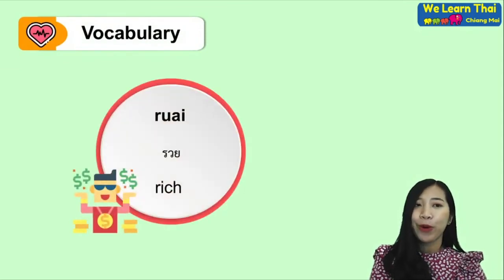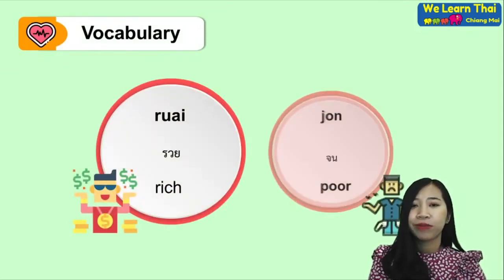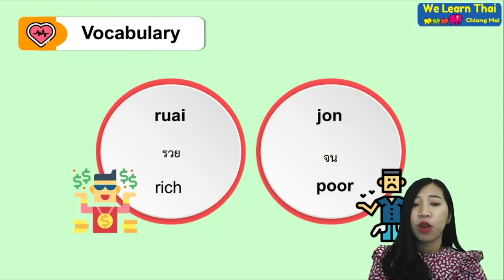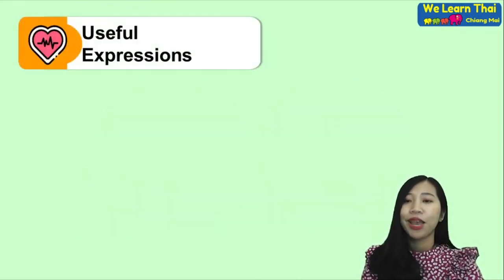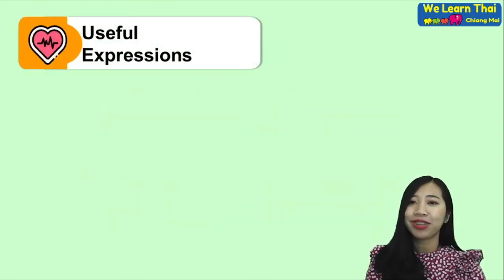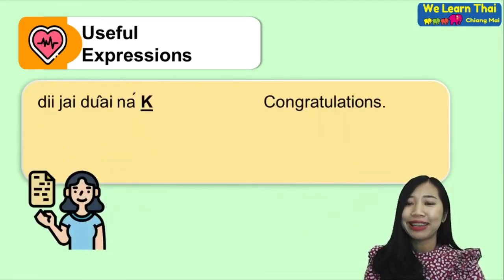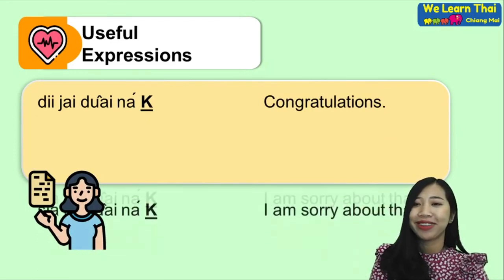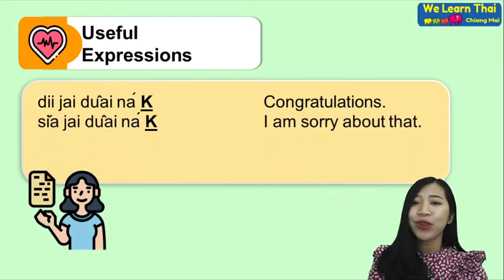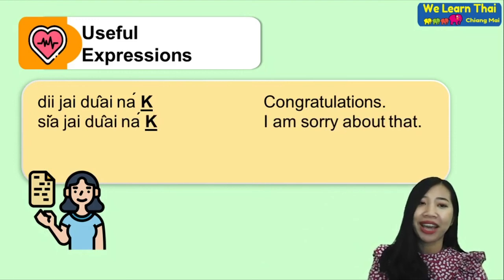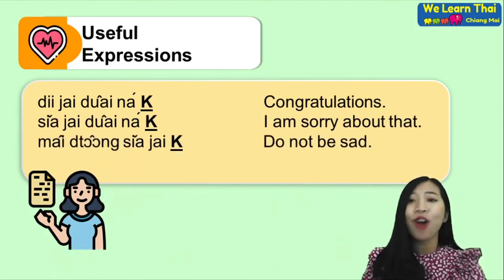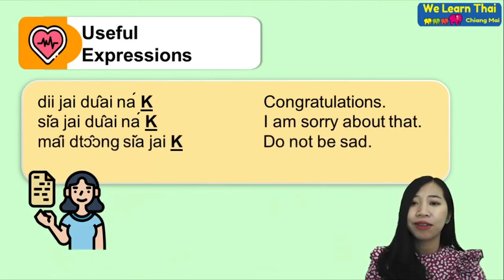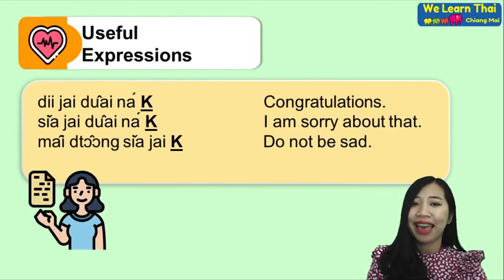We also have 'rui' — rich, and 'jon' — poor. For useful expressions: 'di jai duoi na ka' — congratulations. 'Sia jai duoi na ka' — I'm sorry about that. 'Mai tong sia jai na ka' — don't be sad.